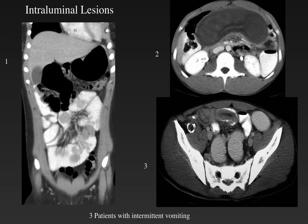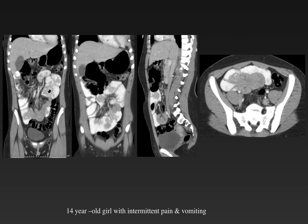Here are three patients with intermittent vomiting with intraluminal lesions causing obstruction. Pause the video and take a minute to look at each of these patients. The first patient is a 14-year-old girl with intermittent pain and vomiting, who has multiple filling defects throughout the small bowel and a small bowel intussusception. On physical exam, she had melanotic spots on her lips as the result of Peutz-Jeghers syndrome, with multiple hamartomatous polyps filling the small bowel and causing increasing small bowel obstruction as they grew.